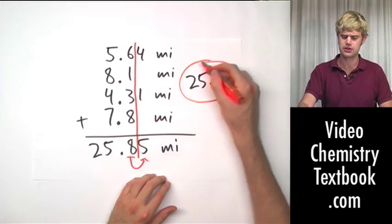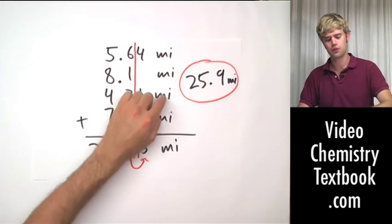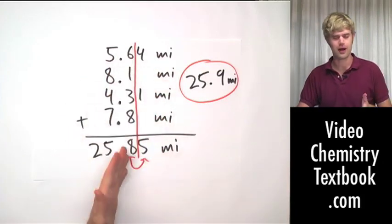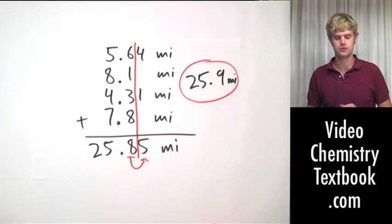Now, the take home message here though is that all of these were measurements and so we had to round with significant figures because we always use those for measurements.